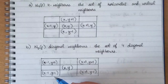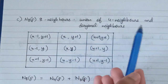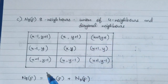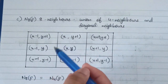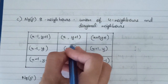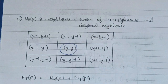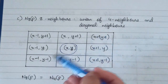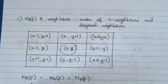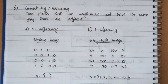Next is eight neighbors, which is the union of four neighbors and diagonal neighbors. Here we consider all cases — horizontal, vertical, and diagonal elements — so all the surrounding elements of the pixel are included as the eight neighbors. Since it's the combination of both, N8(p) can be represented as N4(p) union Nd(p).